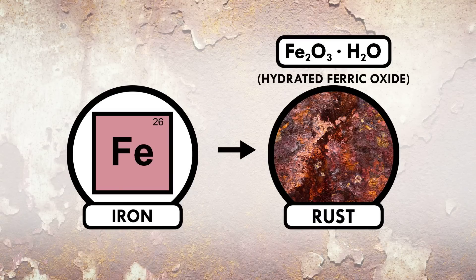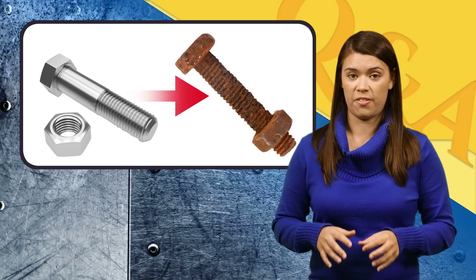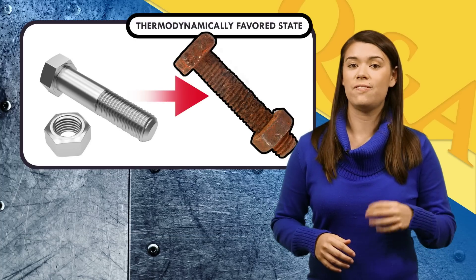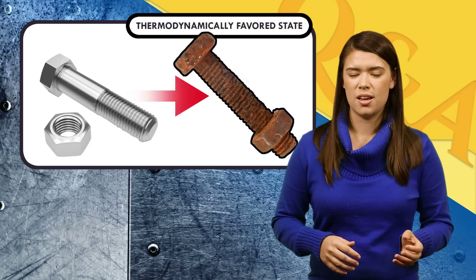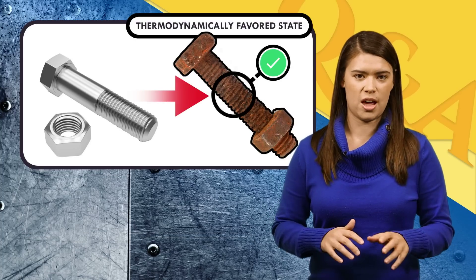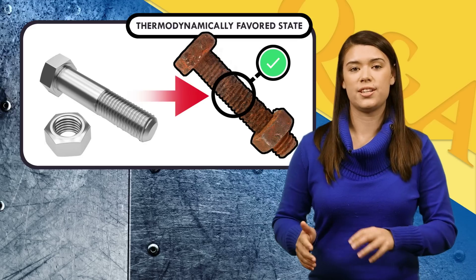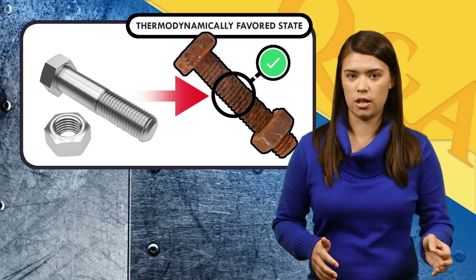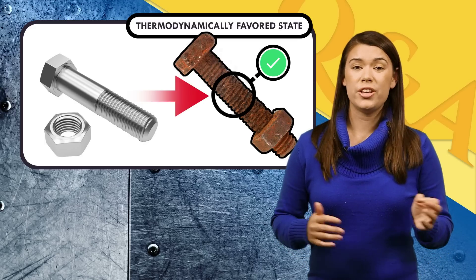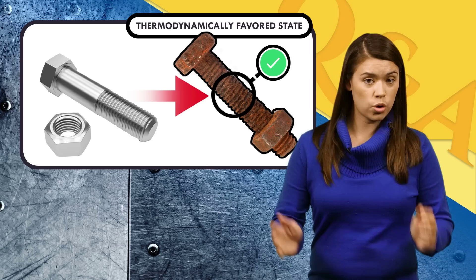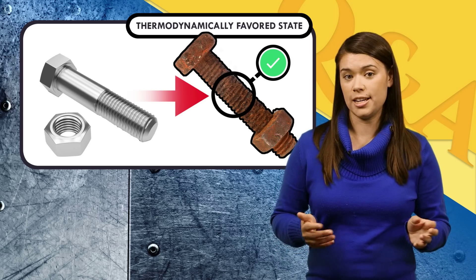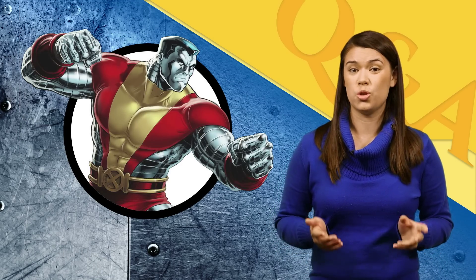But why exactly does this happen? Well, iron and other metals that corrode can't really help it. The rusty form of the metals is the thermodynamically favored state, meaning they would totally prefer to be that way all the time, rather than stay in their pure elemental form. We humans just force it to be in a different state for our metallic needs. So rusting is metal's way of showing us who's boss.